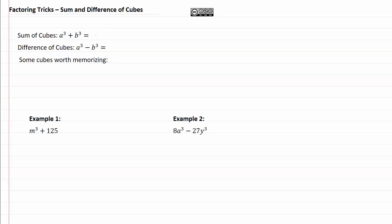When we're doing the sum of cubes, first thing is that we always are going to just write the bases with whatever the sign is there, so in this case a plus b. Then we square the first term, do the opposite sign, take a times b, and then plus b squared.